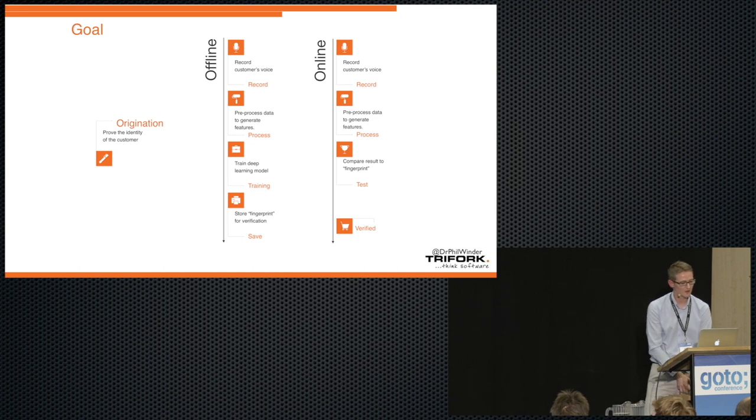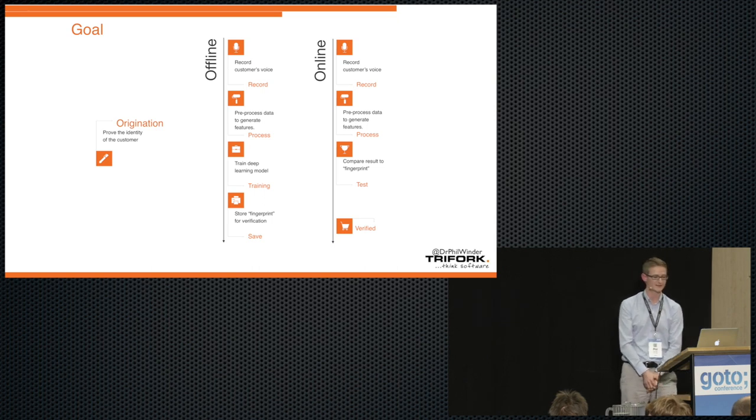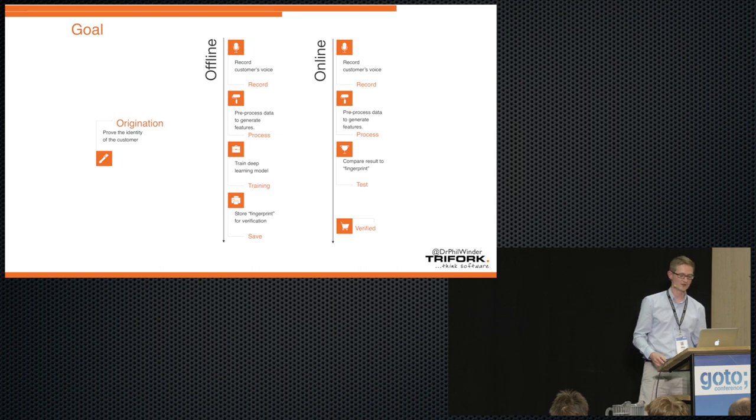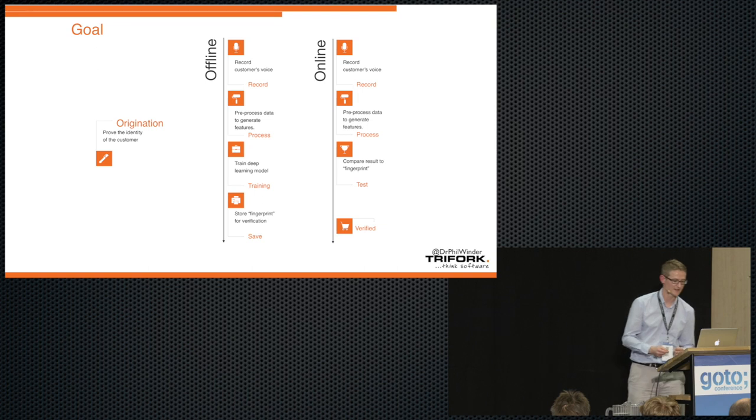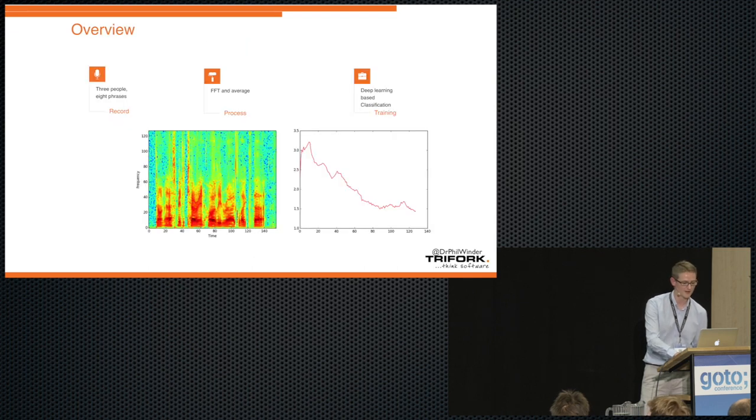So to do this, what we'd have to do is to record the customer's voice, we'd then pre-process the data in some way to clean it up and put it in a format that's capable of being put into an algorithm. In this case, we would train a deep learning model, but it could be any algorithm, and then we'd store that fingerprint for future verification. In the online scenario, so once you've got that set up, the user would come on, you'd re-record his voice again, maybe against a preset phrase, maybe against a new phrase, and then you'd compare that result to the fingerprint. That would prove whether that person is really who they say they are.